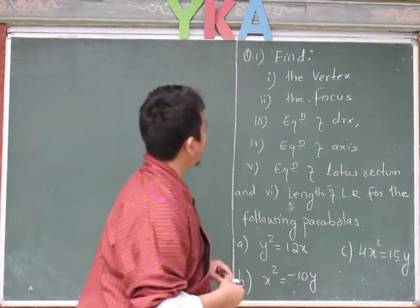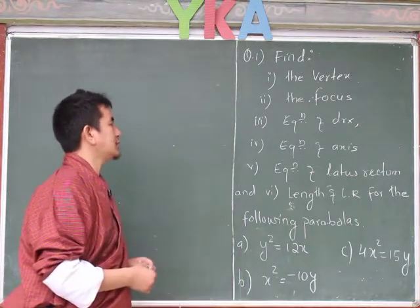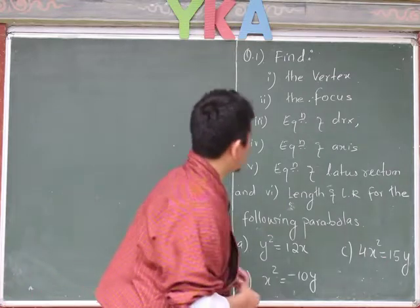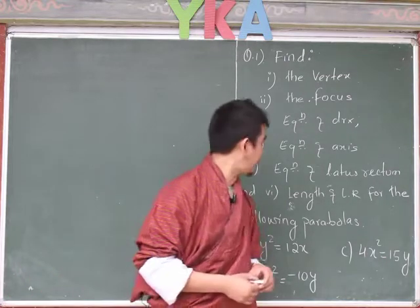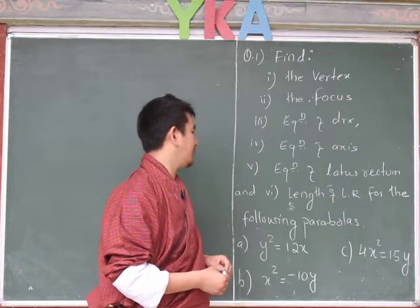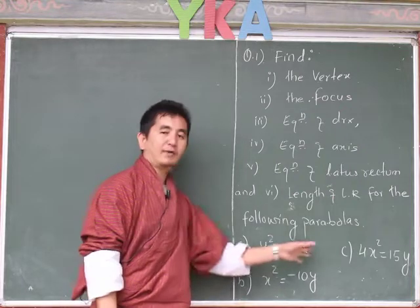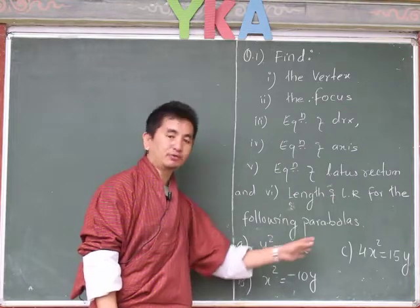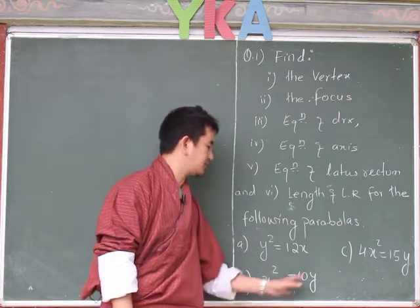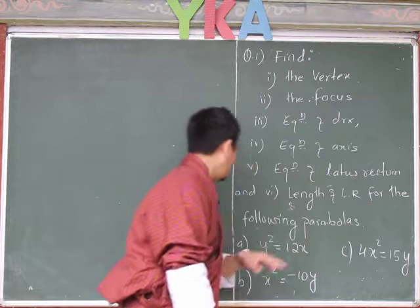Question number one: we need to find the vertex, the focus, equation of directrix, equation of axis, equation of latus rectum, and length of latus rectum for the following parabolas. I have chosen three questions: (a) y² = 12x, (b) x² = negative something, and another. Anyhow, let me go with part (a).